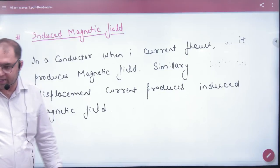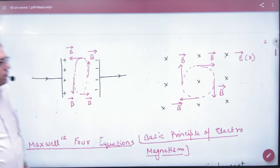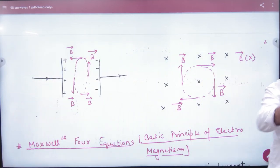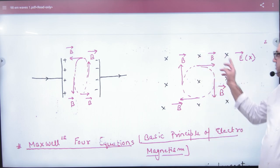Induced magnetic field is shown that if you have a changing electric field, it is magnetic, not changing electric field. You have a changing electric field.